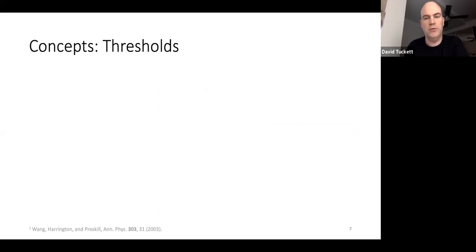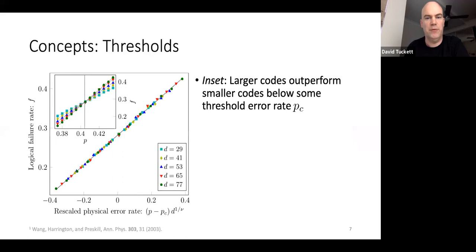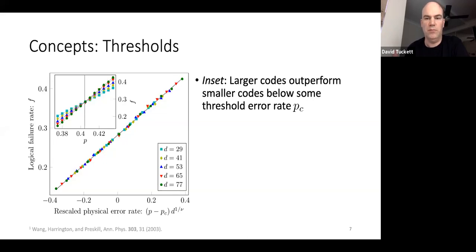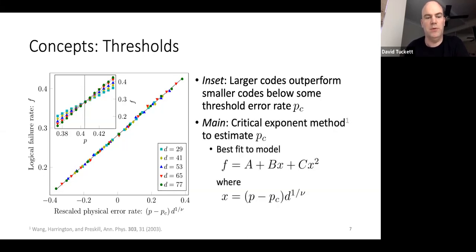I'll be talking a lot about thresholds, so let me quickly clarify. If we plot logical failure rate against physical error rate, there's a threshold physical error rate below which, as we increase the code size, we can make the logical failure rate arbitrarily small. That's what I mean by threshold. In our estimations, we use the critical exponent method due to Wang, Harrington, and Preskill.